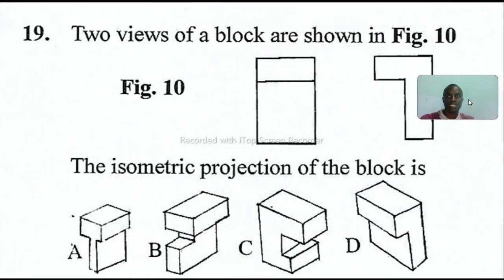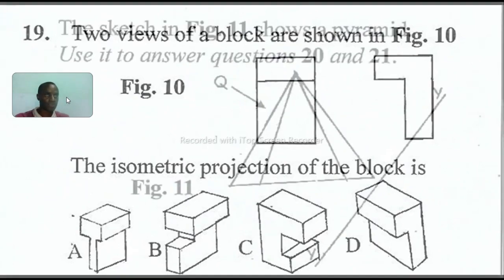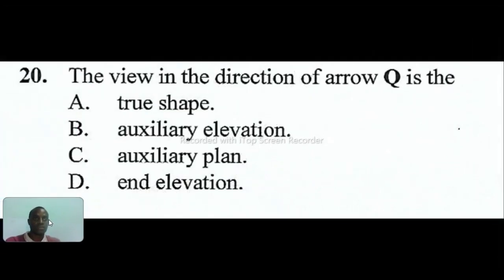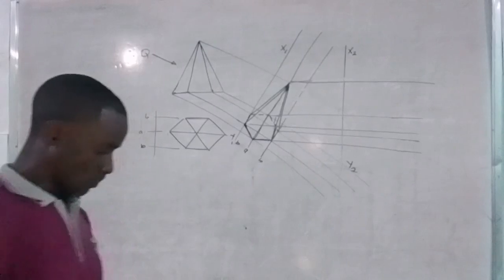Question nineteen: two views of the block are shown in figure ten. The isometric projection of the block is D. Question twenty: the sketch in figure eleven shows the pyramid. Use it to answer questions twenty-one and twenty-two. The view in the direction of ROQ is auxiliary plan. Since the line of projection is fired into the front, the dimension is taken from the plan. This projection is called auxiliary plan because measurement comes from the plan.